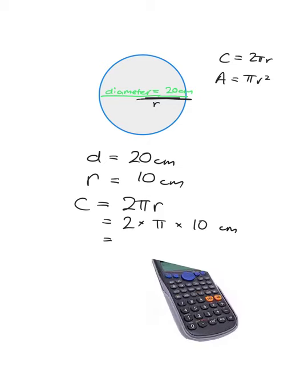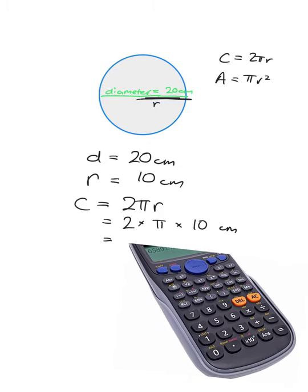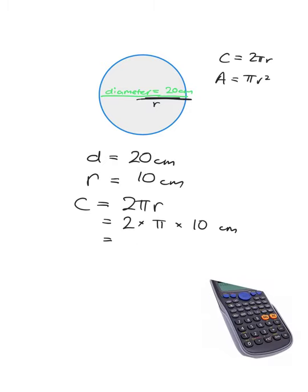To work that out on the calculator: press 2, multiplied by pi — on my calculator pi is the yellow function, so I go shift and then the key — then multiply by 10. The answer comes to about 62.83 centimeters, rounding to two decimal places. For the area, I do π × r², which is π × 10², so π multiplied by 100. Using the same shift-pi method on the calculator, rounding to two decimal places gives 314.16 centimeters squared.